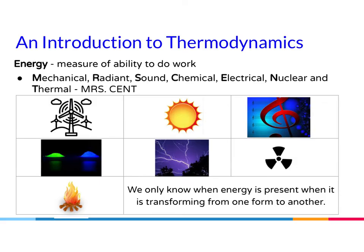Let's start with a little refresher on energy. Energy is the measure of ability to do work. There are seven types of energy: mechanical, radiant, sound, chemical, electrical, nuclear, and thermal. We have touched on nuclear and electrical a little bit when we talked about the conductivity of metals, and we're going to focus on chemical and thermal energy in this unit.